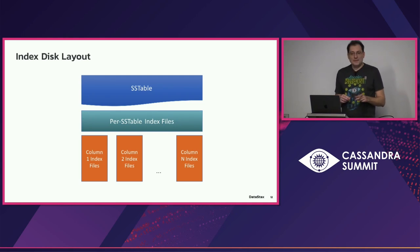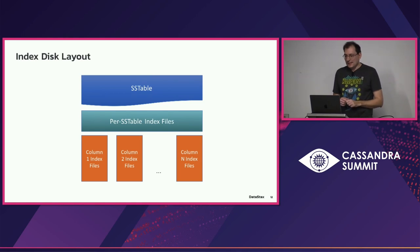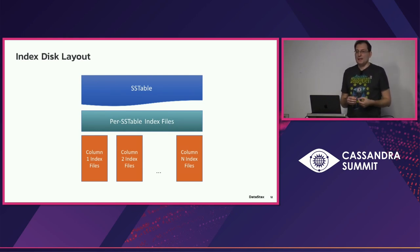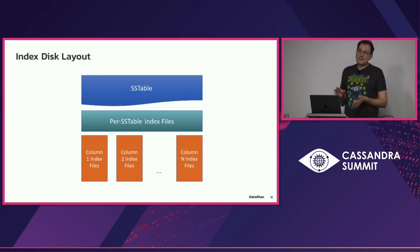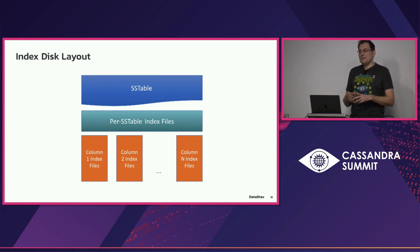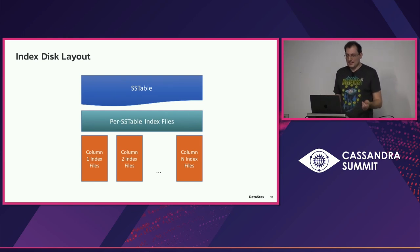Each index — and this is unique to SAI, SASI didn't have this — is actually a set of files, not a single file. There are two types of components. One type is per-SS table files: we realized that some data is common for all indexes on a particular SS table. If you create three indexes on three columns, the primary key data is shared — there's no point duplicating it in each column index. We store it once and all column indexes use it — these are per-SS table index files.